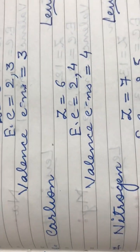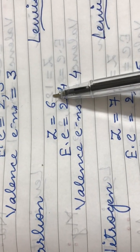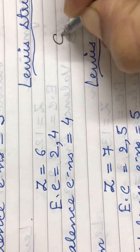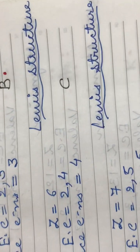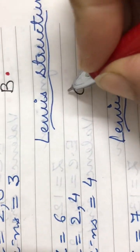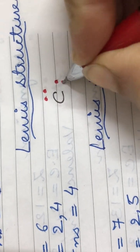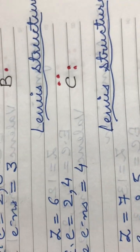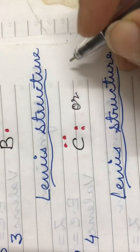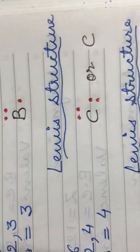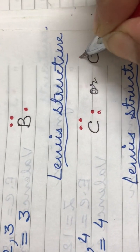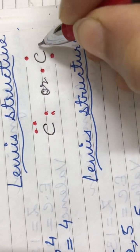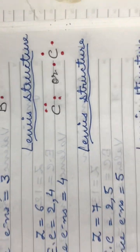Coming to the next element, carbon. Carbon has an atomic number of six. Its electronic configuration is 2,4 and it has four valence electrons. The Lewis structure for carbon is the symbol C with four dots around it in pairs. Alternatively, we can show the four electrons one on each side of the symbol C.